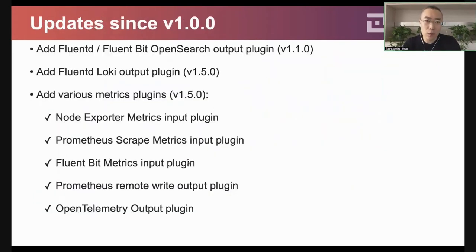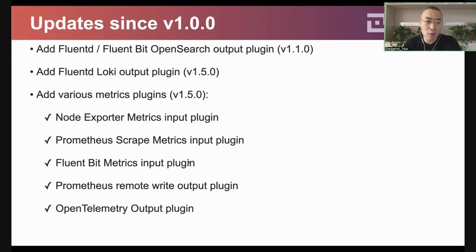Since release 1.0, we have made some big improvements. For example, we have added the OpenSearch plugin for Flimbit and Flimbit. We have added the Locky plugin. In recent months, we noticed that Flimbit is starting to support metrics plugins. So in release 1.5, we have added some metrics-related plugins.